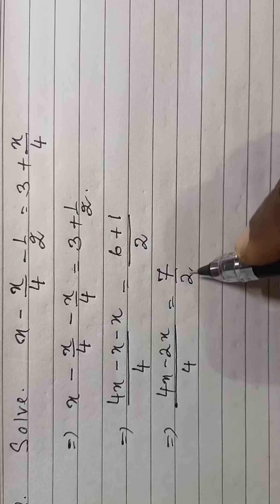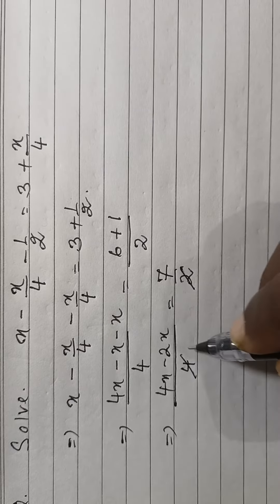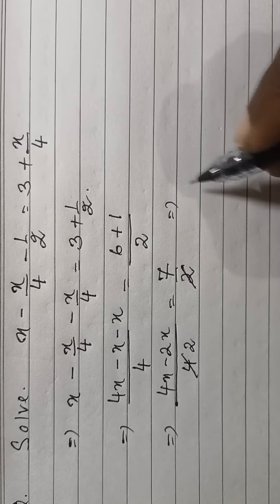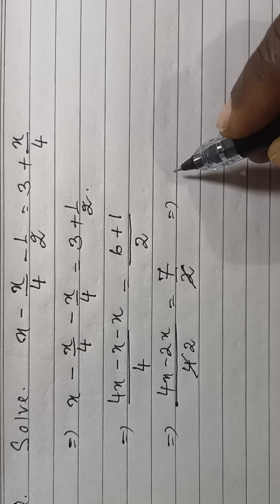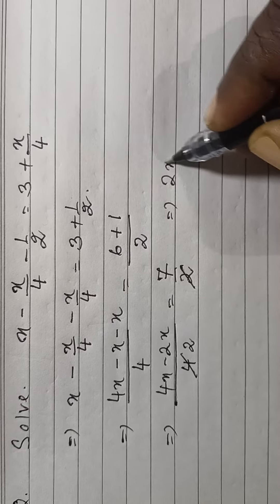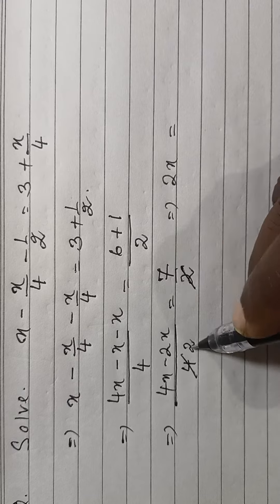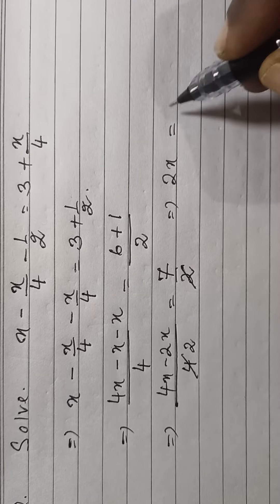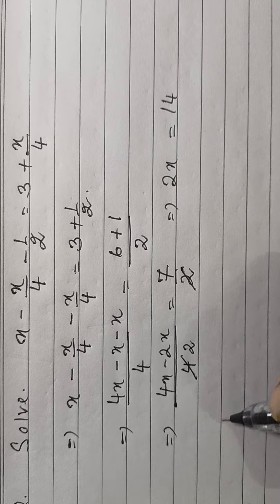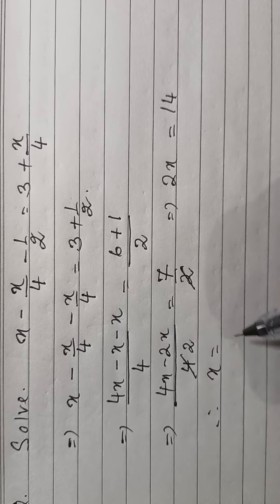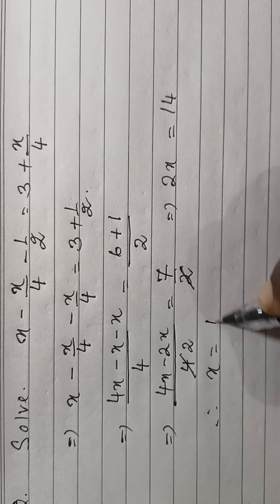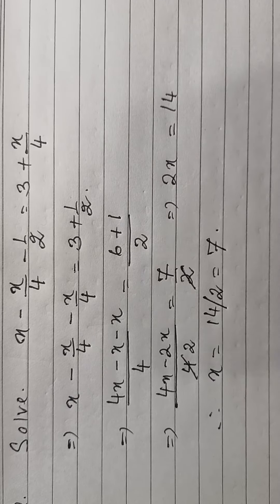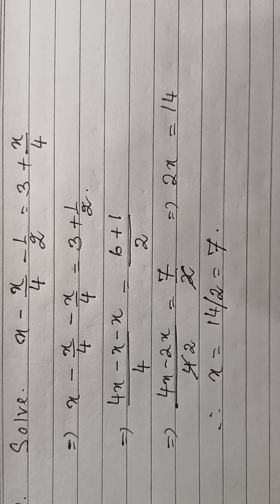We can cancel 2 with 4, leaving 2. Then, 4x minus 2x is 2x, equal to 7 into 2 by cross multiplication, that is 14. Therefore, x is equal to 14 by 2. So the answer is 7.